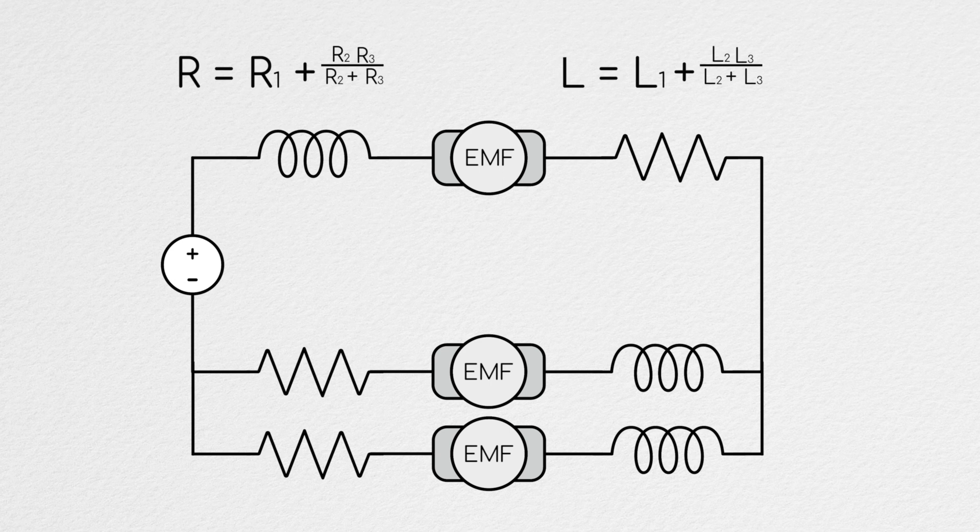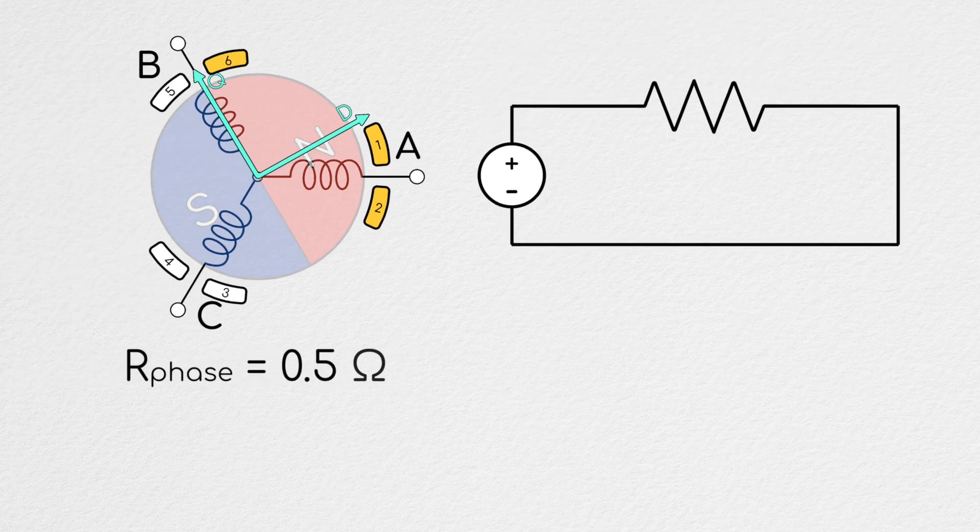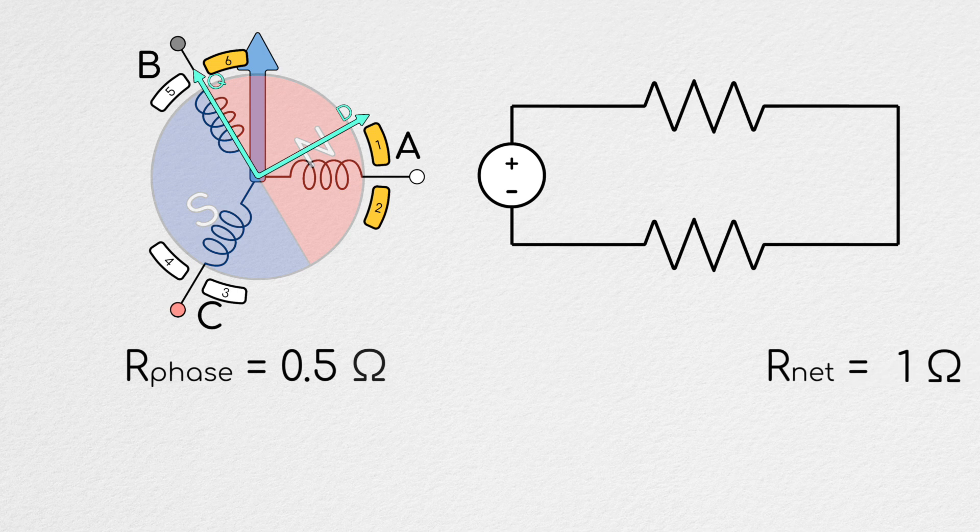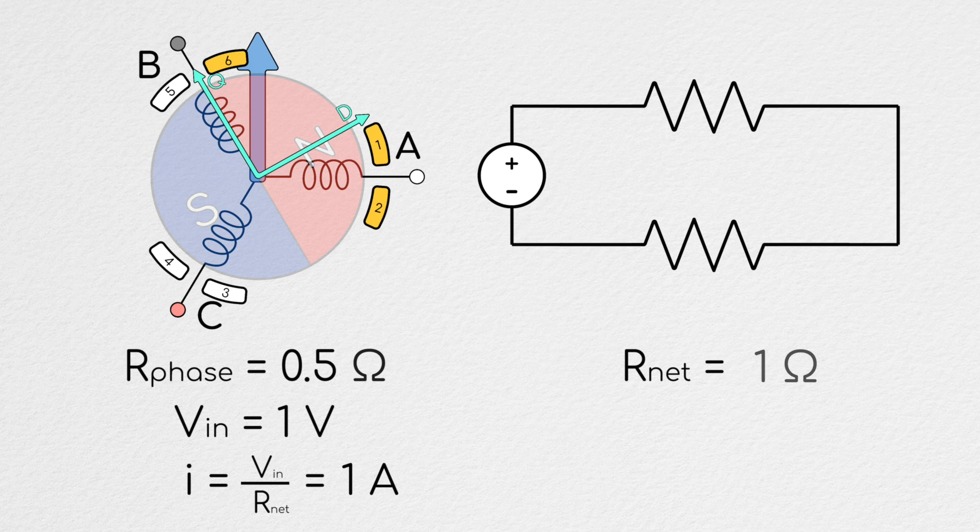I imagine that this may be unclear, so let's do a quick example to better demonstrate this. If a single motor phase has a resistance of one-half of an ohm, connecting two phases in series, as we do in six-sector block commutation, results in a one-ohm circuit. So if we put one volt across it, we get one amp of current running through it.